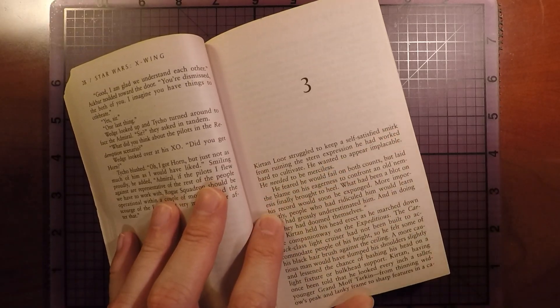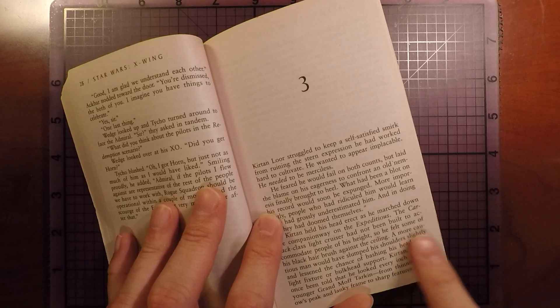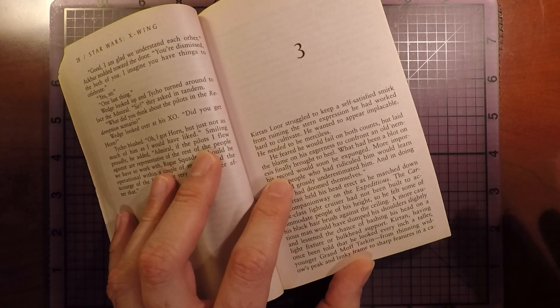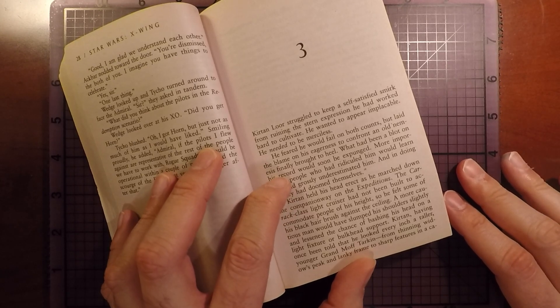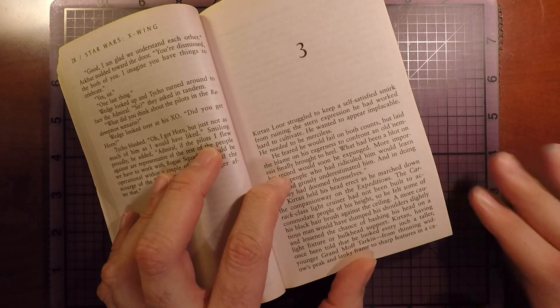So he's walking, and we learn a lot about this dude as he's walking. He's walking through here, and the corridors of this Star Destroyer, or I'm sorry, the Carrot Class Light Cruiser that he's on, are not tall.